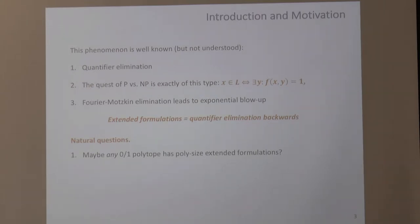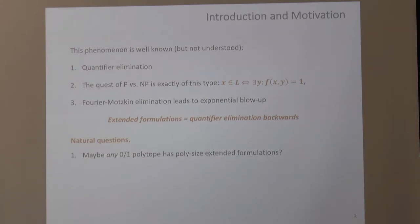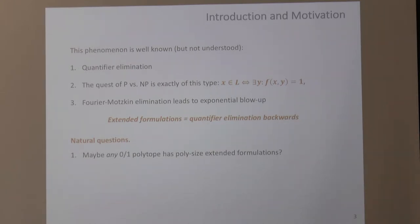There are a few very natural questions that arise. First: if you give me any 0-1 polytope — the convex hull of incidence vectors of combinatorial objects — could it be that every such polytope has a polynomial-size extended formulation? At first, this seems impossible if NP ≠ P. However, the key point is we only talk about the number of inequalities, not the encoding length. In principle, you could trade encoding length for fewer inequalities, allowing crazy coefficient sizes.